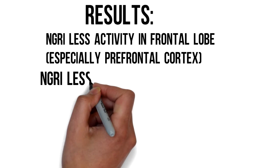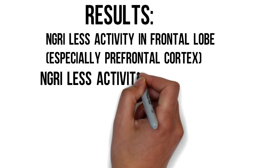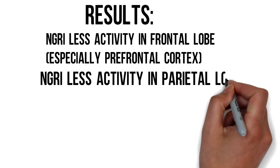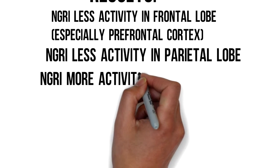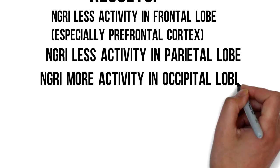The NGRIs also showed less activity in the parietal lobe which is associated with abstract thinking, but they showed more activity in the occipital lobe which is for vision.